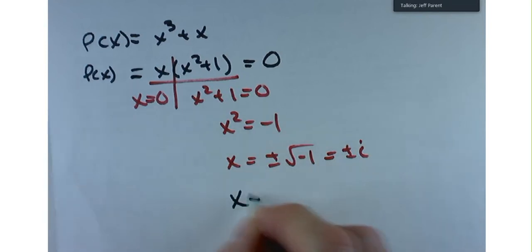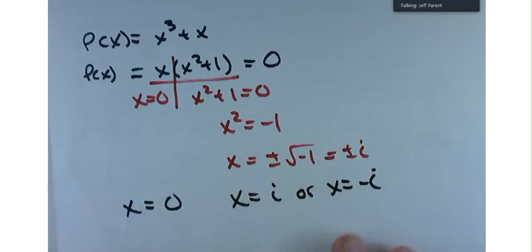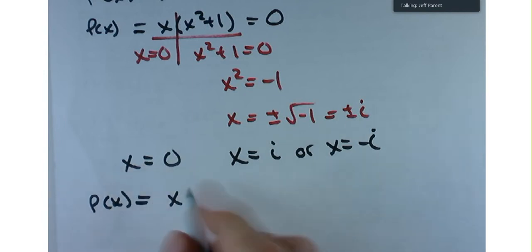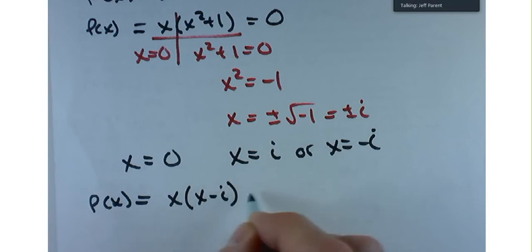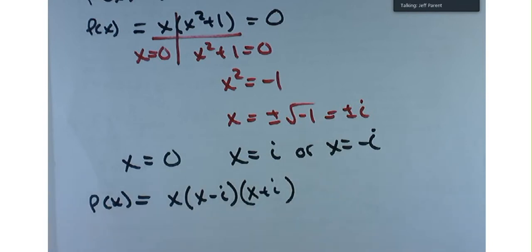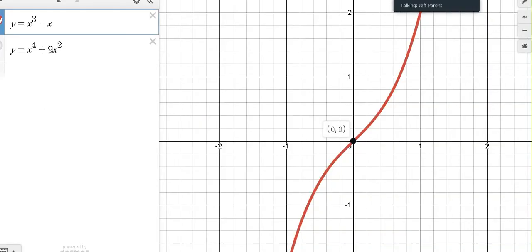Those roots would be x equals i or x equals negative i. Together with x equals 0, we can write this polynomial fully factored: P of x equals x times x minus i times x plus i. That's fully factored. You can read off the roots and see that two of them are complex — that's why the graph only crossed the x-axis once, because the other two spots were in your imagination.